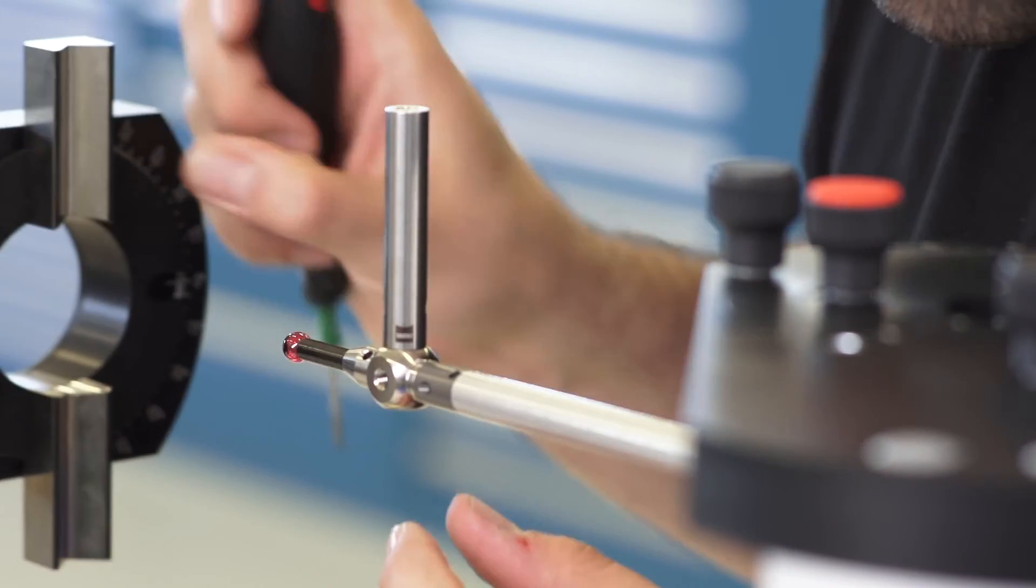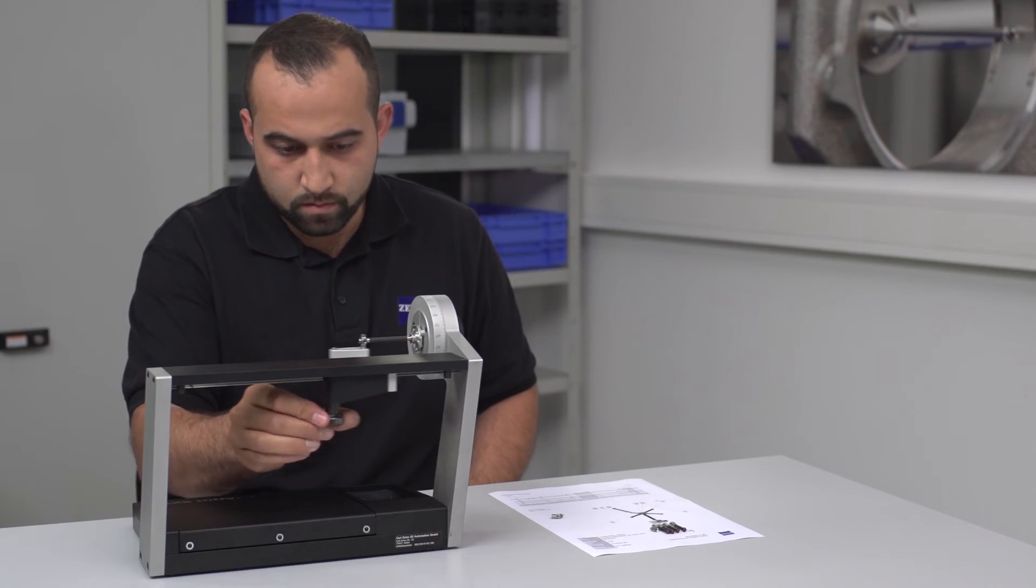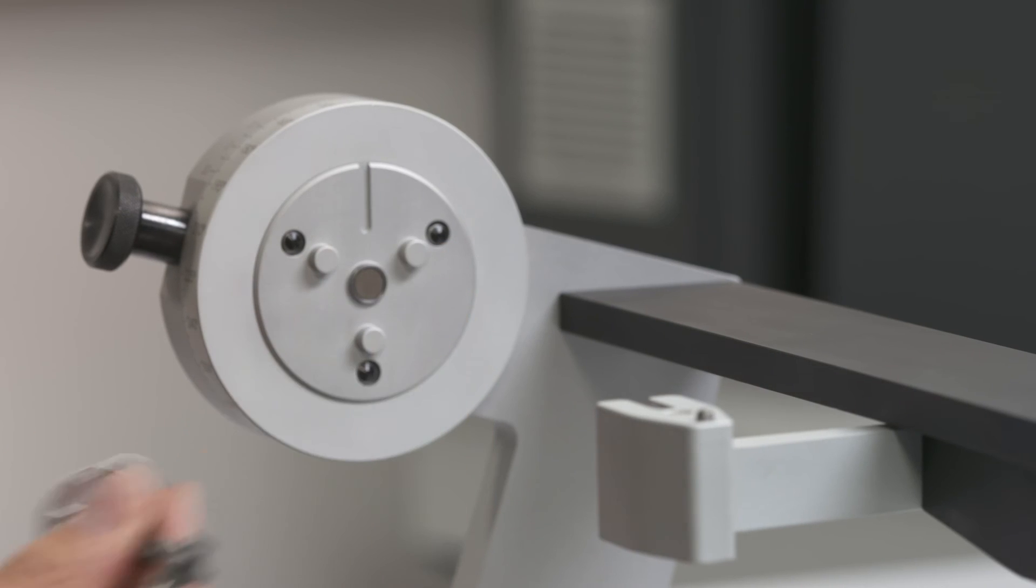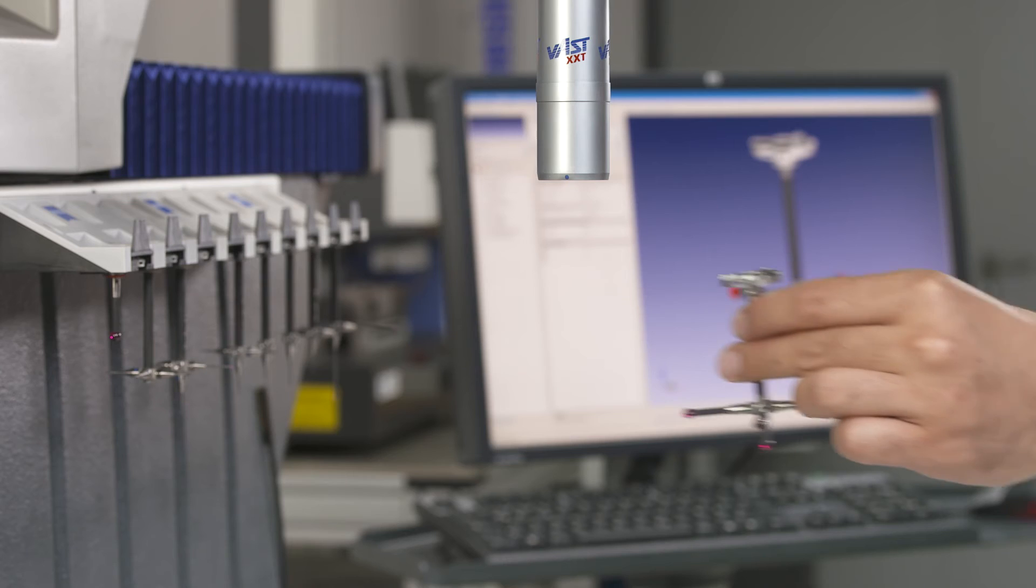Both alignment devices reduce the downtime of your coordinate measuring machines because the stylus systems do not have to be adjusted on the machine.